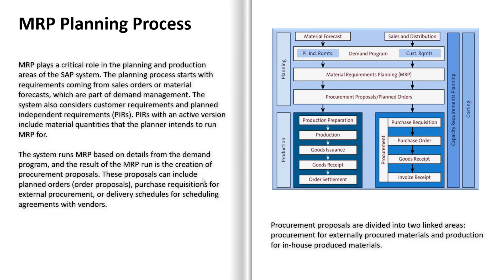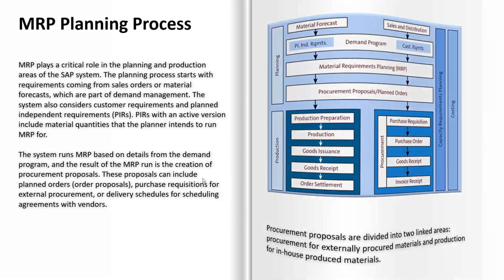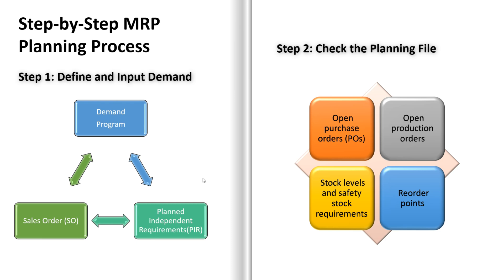Now let us understand the step-by-step MRP planning process. The Material Requirements Planning process is an essential component of production and inventory management in SAP, designed to ensure that the right materials are available at the right time in the right quantities to meet production demands. Step 1: Define input demand. MRP starts by identifying the demand for materials, which can come from sales orders — real customer orders that need to be fulfilled — or planned independent requirements, which are internal forecasts based on historical data or anticipated production. This demand forms the foundation for the MRP run.